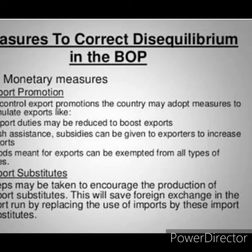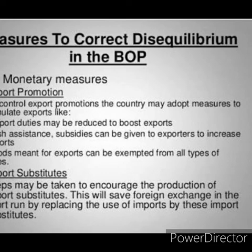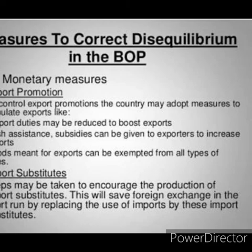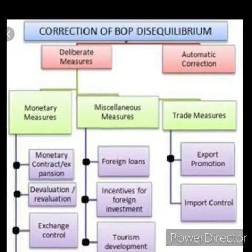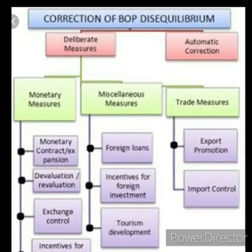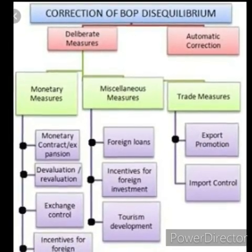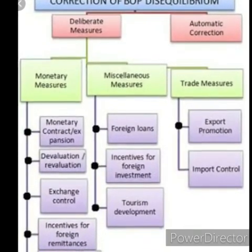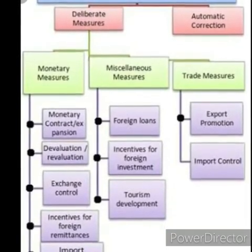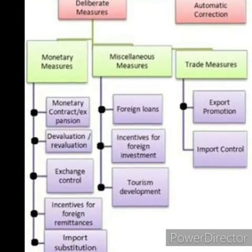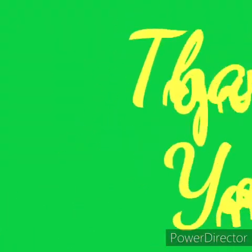Other miscellaneous measures include providing incentives to enhance inward remittances, and import substitution. Import substitution means instead of importing, we create a substitute for that product using what we already have in our country. For example, if you don't have enough tea, use coffee as a substitute instead of importing tea. We should utilize what we already have in our own country and not import goods when we have a suitable substitute available.